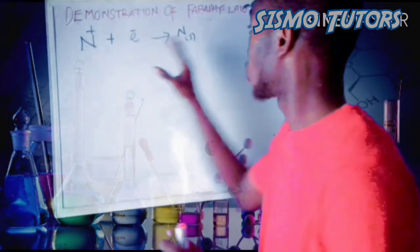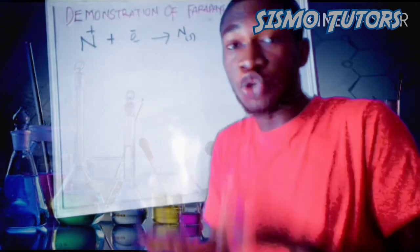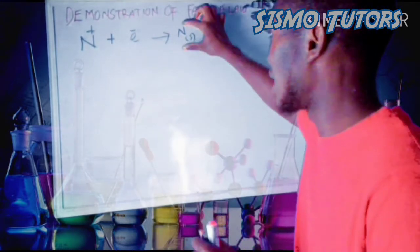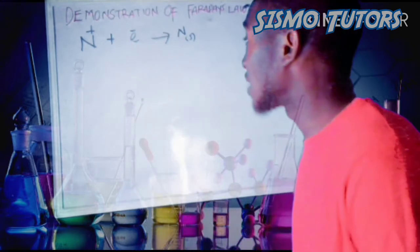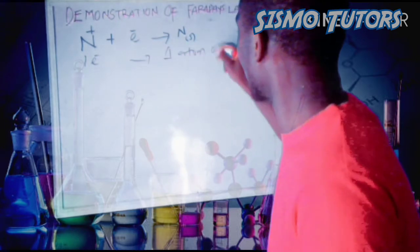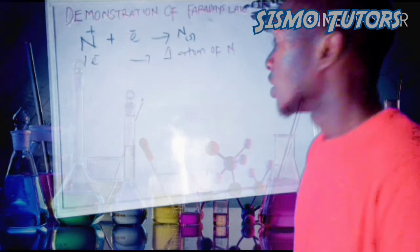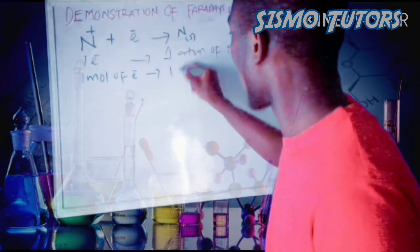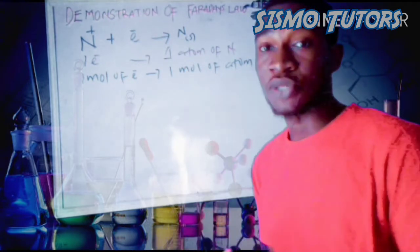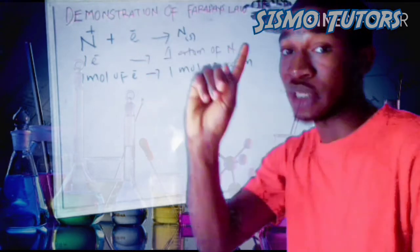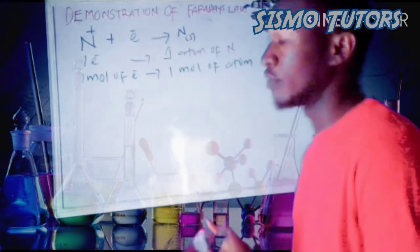Let's consider the demonstration of Faraday's law. Assume this is an element which has a valence of plus one — it gains one electron so that the atom will be deposited. So one electron will give us one atom of the element N. In that same way, one mole of electrons will give us one mole of atoms. This is an ionic equation — a cathodic half reaction. So one mole of electrons will give us one mole of this atom, just as one electron gives us one atom of this element.